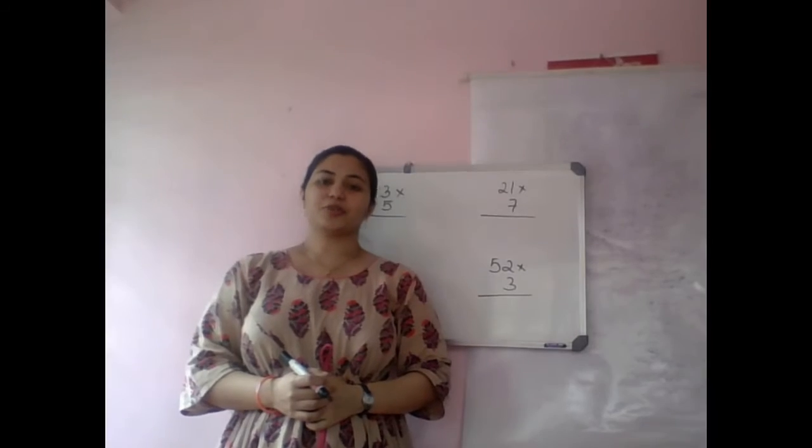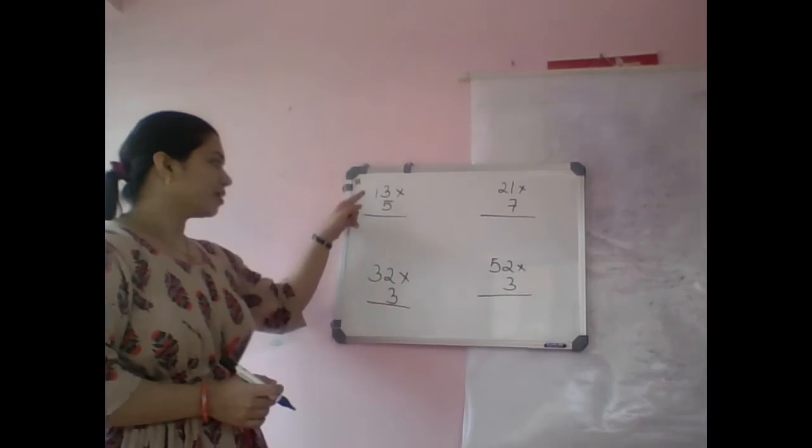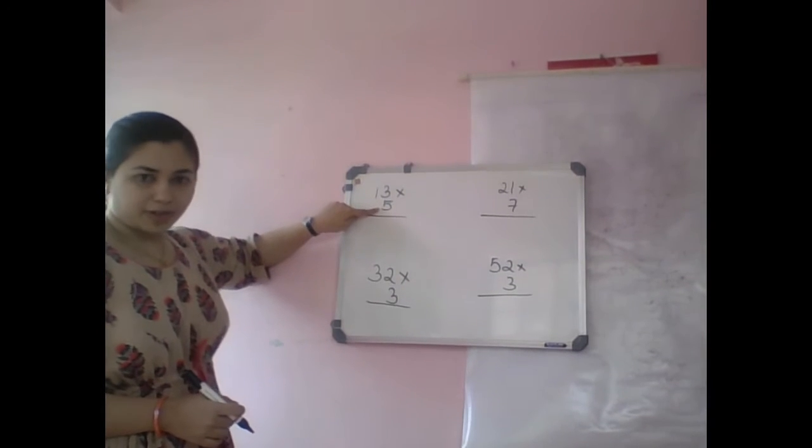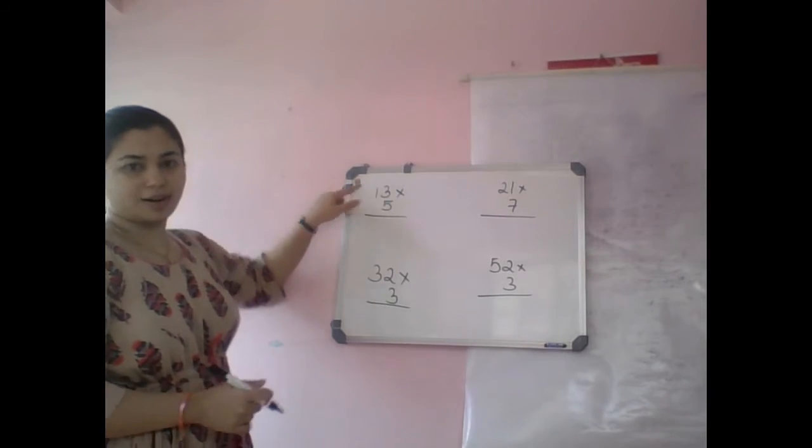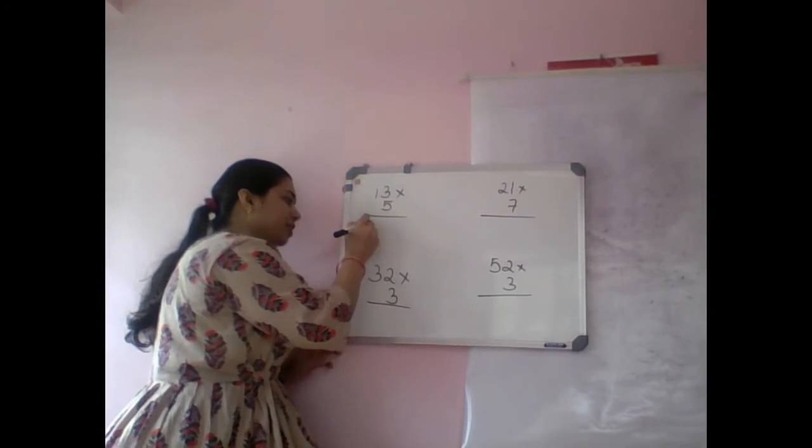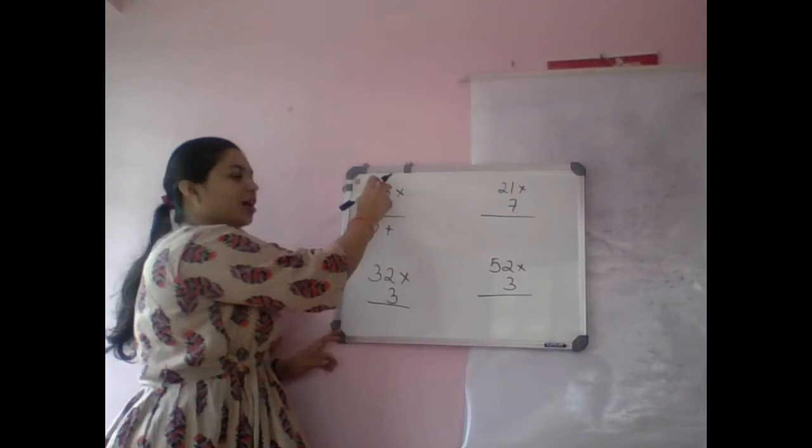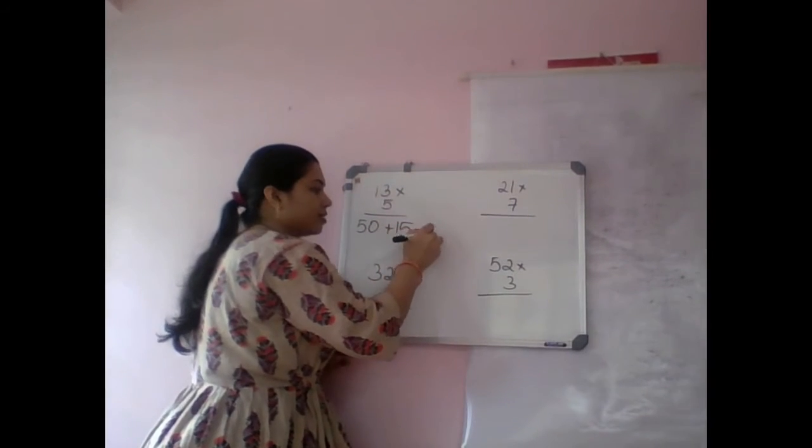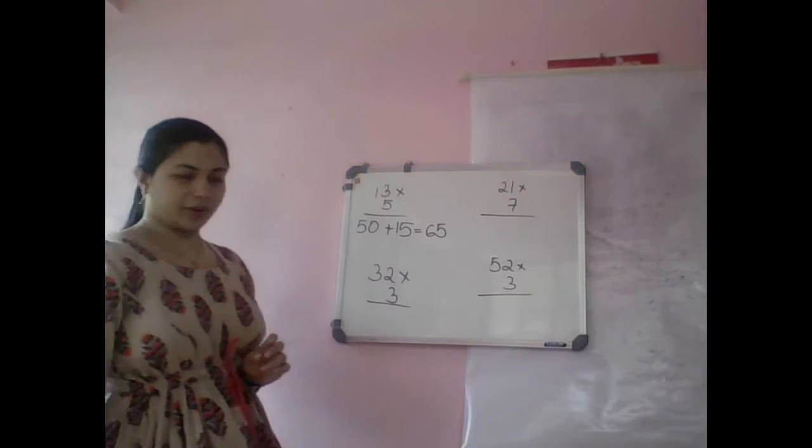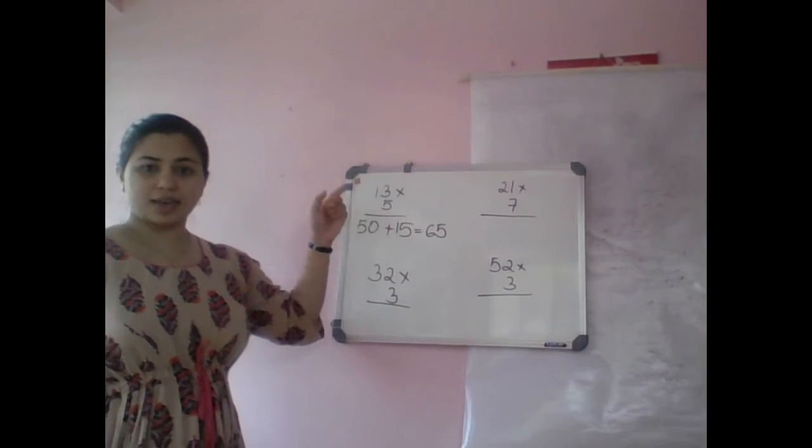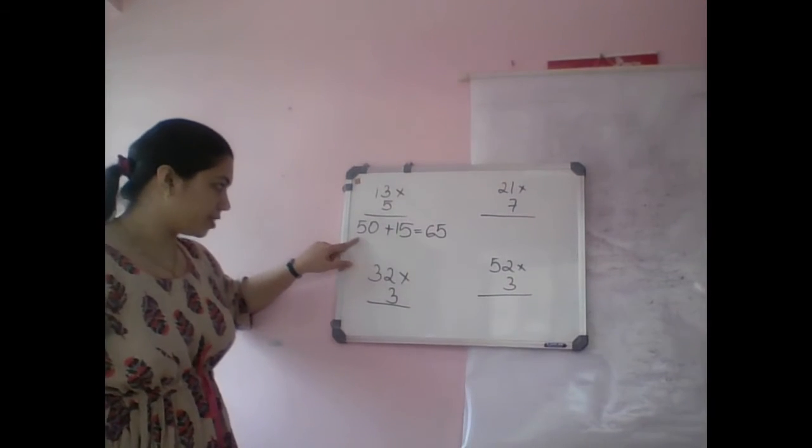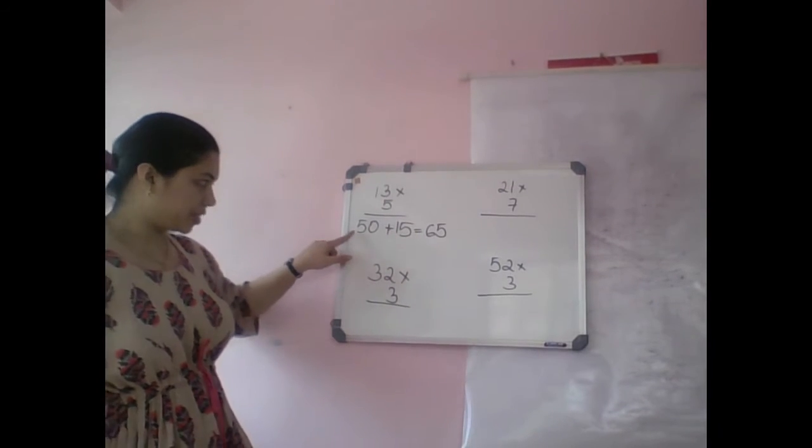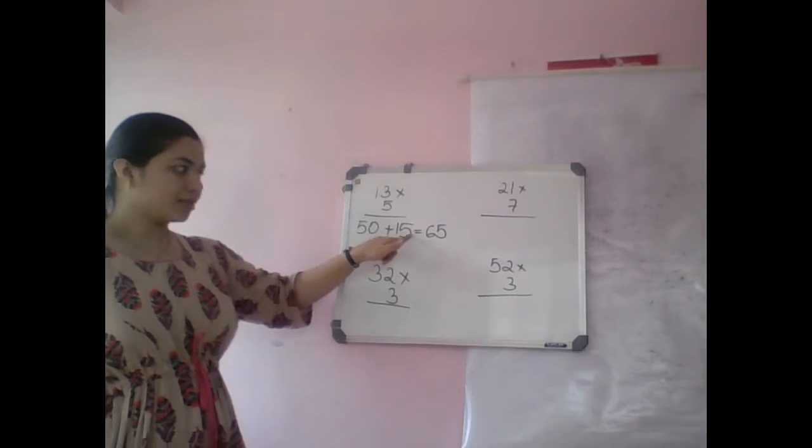13 into 5. From left, so first 5 into 10, that is 50, plus 5 into 3, that is 15. So the answer will be 65. How to add this? Again from left to right: 50 plus 10... 50, 60, 65.